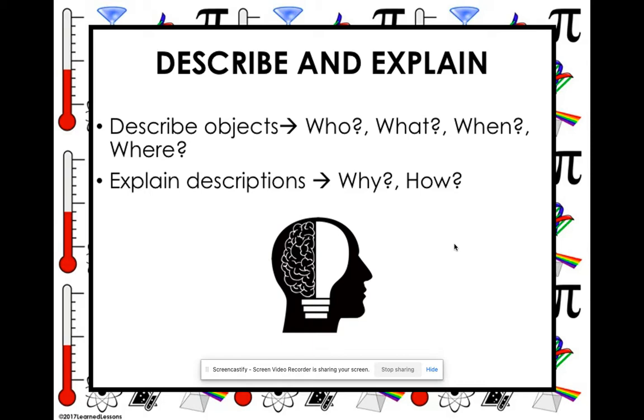So it's really important as a scientist to be very detailed when we're talking about objects. So when I give you a lab sheet, you are telling me maybe who, what, when, where, be descriptive. Why, how?